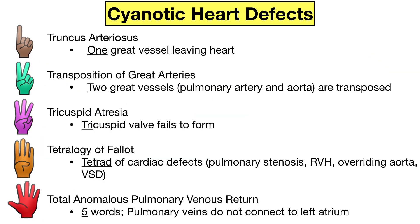So those are the five main cyanotic congenital heart defects — they all start with the letter T and you can count them off on your fingers. Use one finger for truncus arteriosus — one great vessel leaving the heart instead of two. Two crossed fingers for transposition of great arteries — pulmonary artery and aorta are transposed. Three fingers for tricuspid atresia — the tricuspid valve fails to form. Four fingers for tetralogy of Fallot — a tetrad of cardiac defects. Five fingers for total anomalous pulmonary venous return — pulmonary veins connect to the systemic venous system instead of the left atrium.